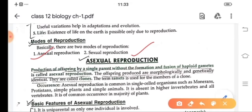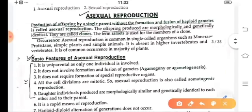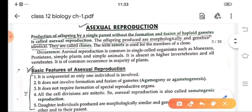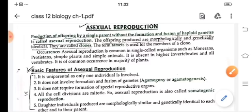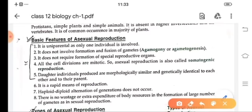Asexual reproduction means the production of the offspring by a single parent. In this asexual reproduction, formation and fusion of haploid gametes is not required. Only single parent is there and this single parent is capable enough to produce their new young ones. These young ones, they are morphologically and genetically identical and they are known as clones. Asexual reproduction usually occurs in lower class of animals like Protista, Monera, then Protozoans.